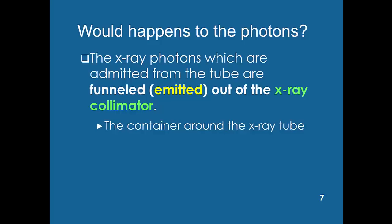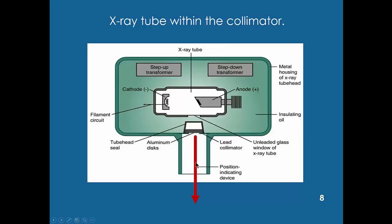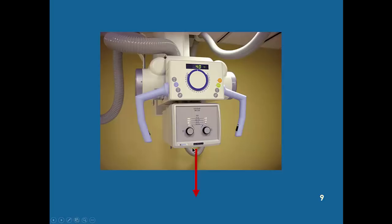The photons fly around inside the x-ray tube, but something called the collimator contains and funnels them out the front — almost like the barrel of a gun. Here's the x-ray tube with a cathode and anode; the green thing is the collimator. You can aim this whole assembly: if you want to take a picture of someone's wrist, you aim it at the wrist. You can also narrow down the beam using the collimator's lead shields so you don't blast the whole arm.